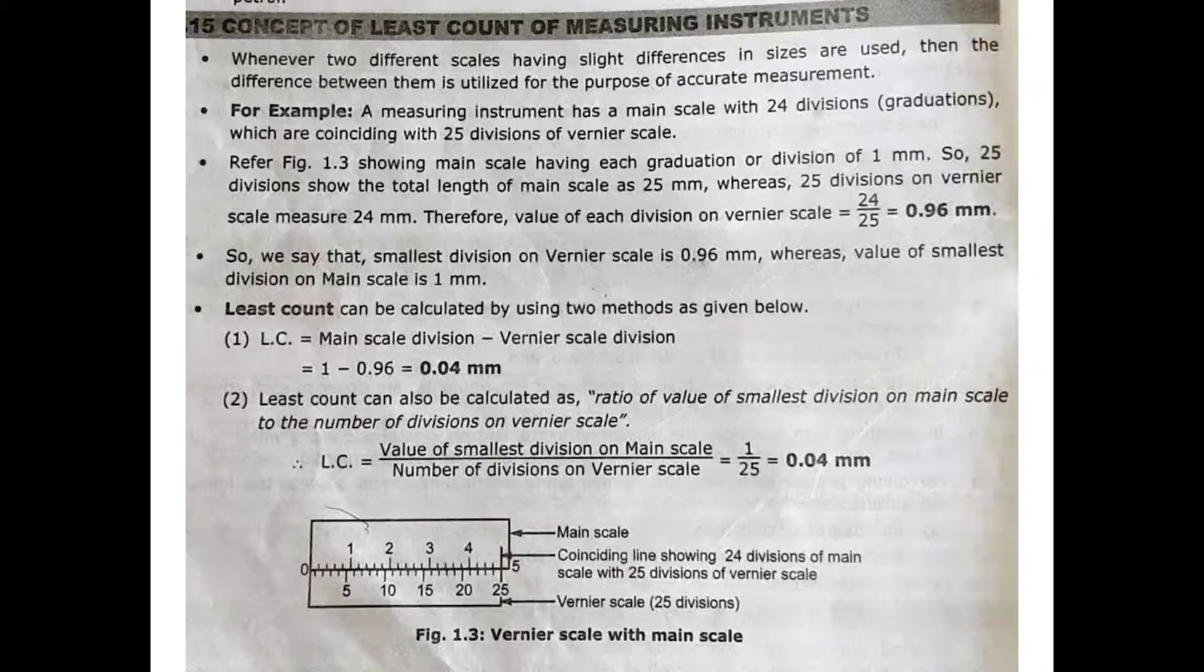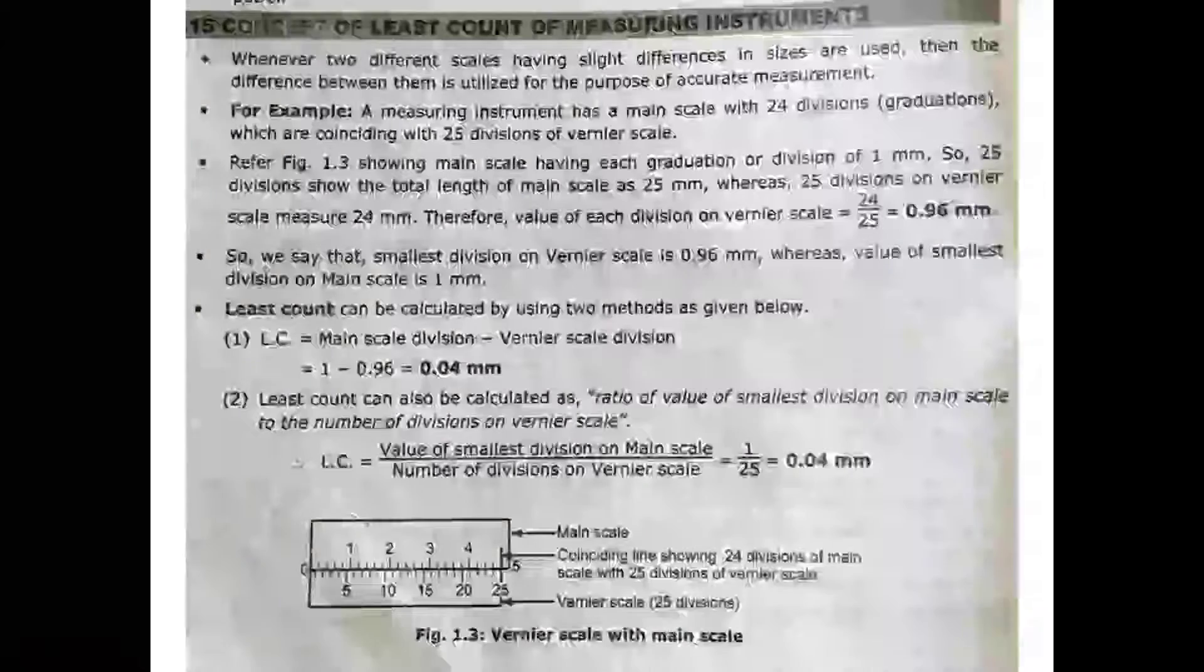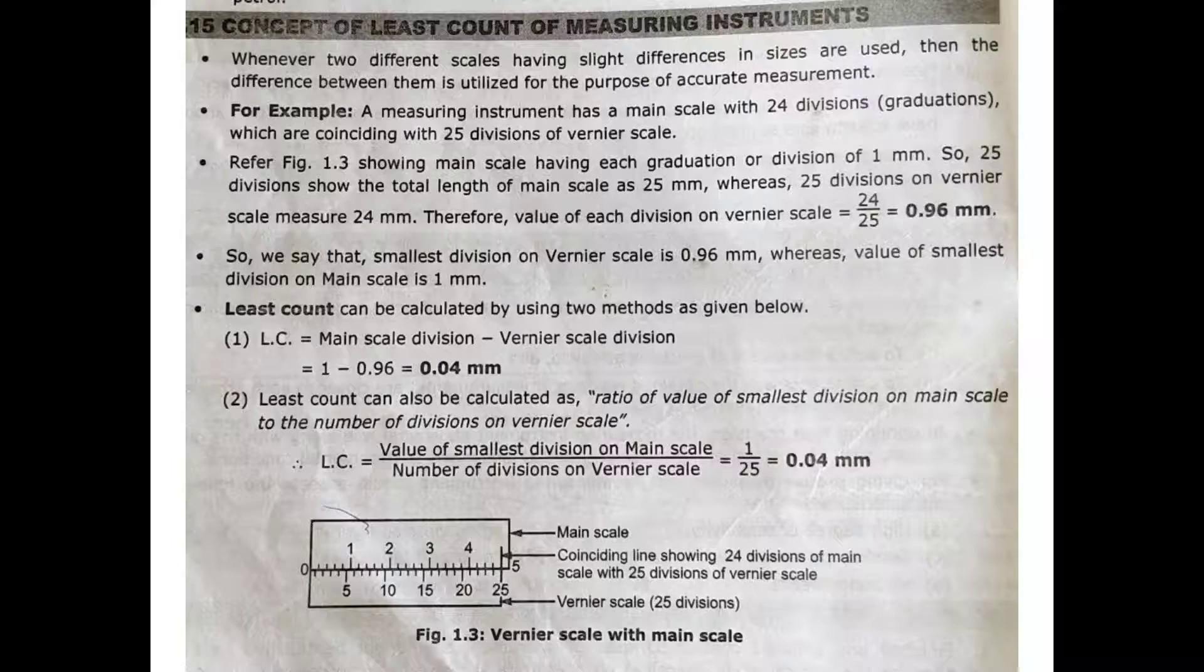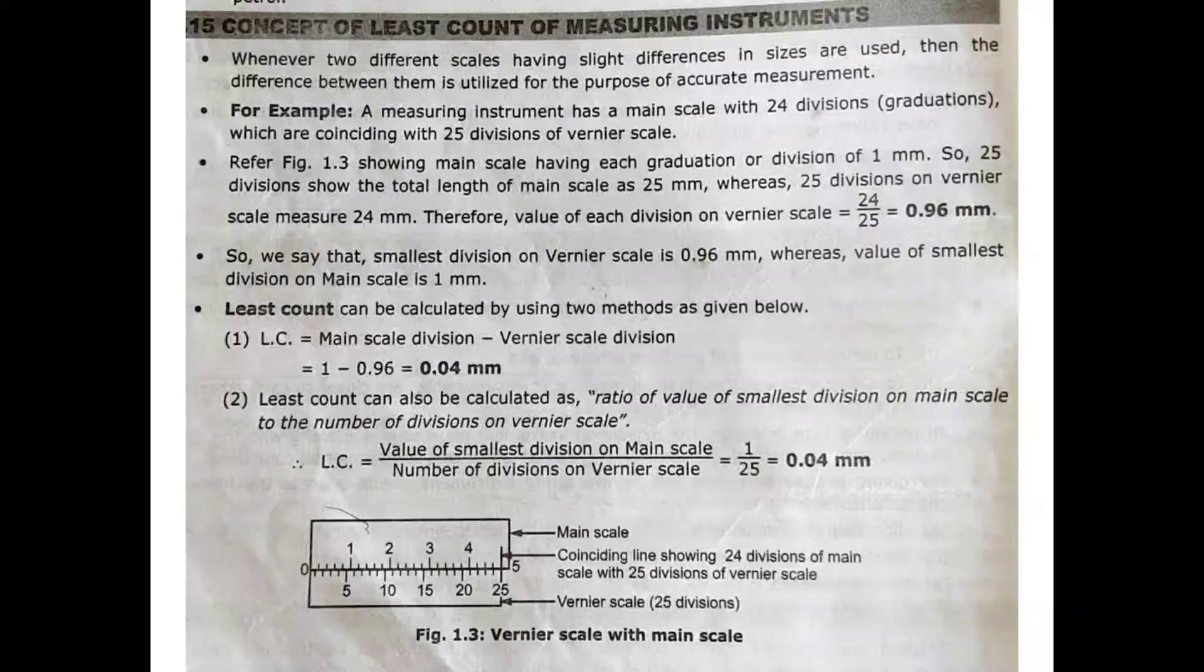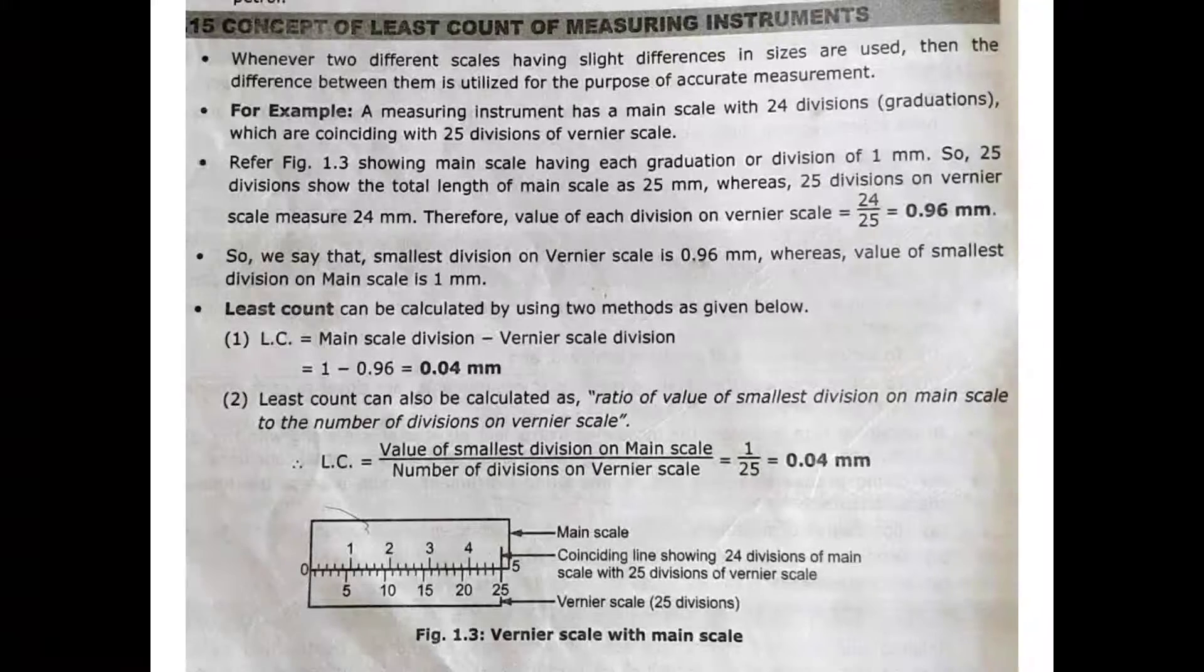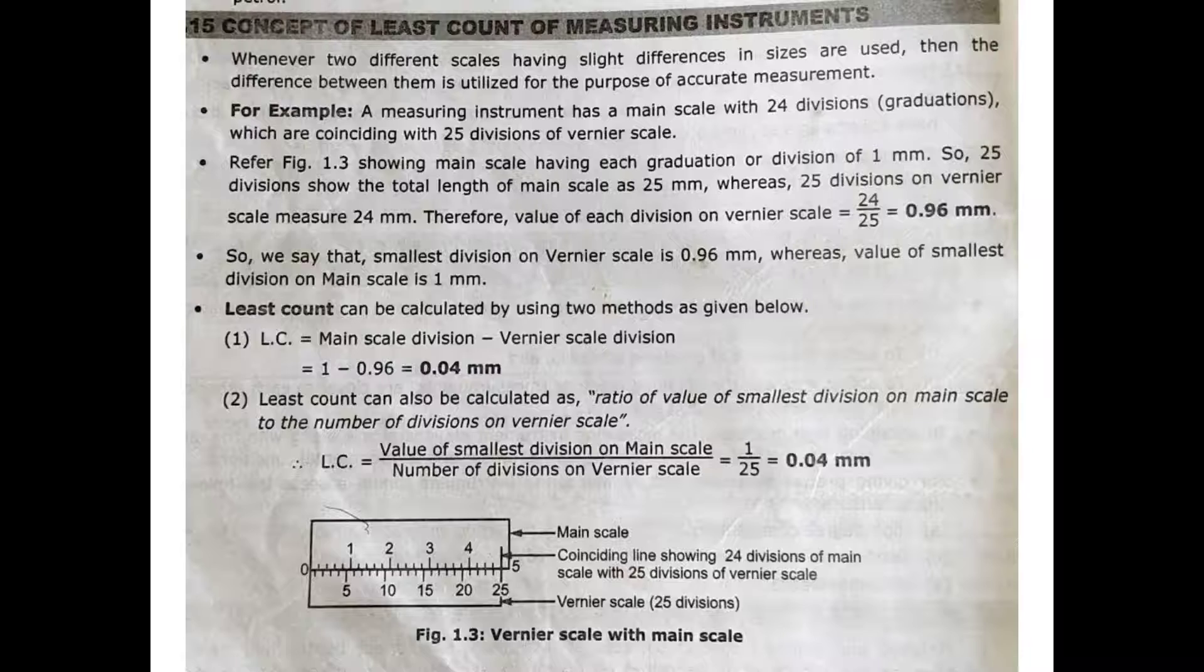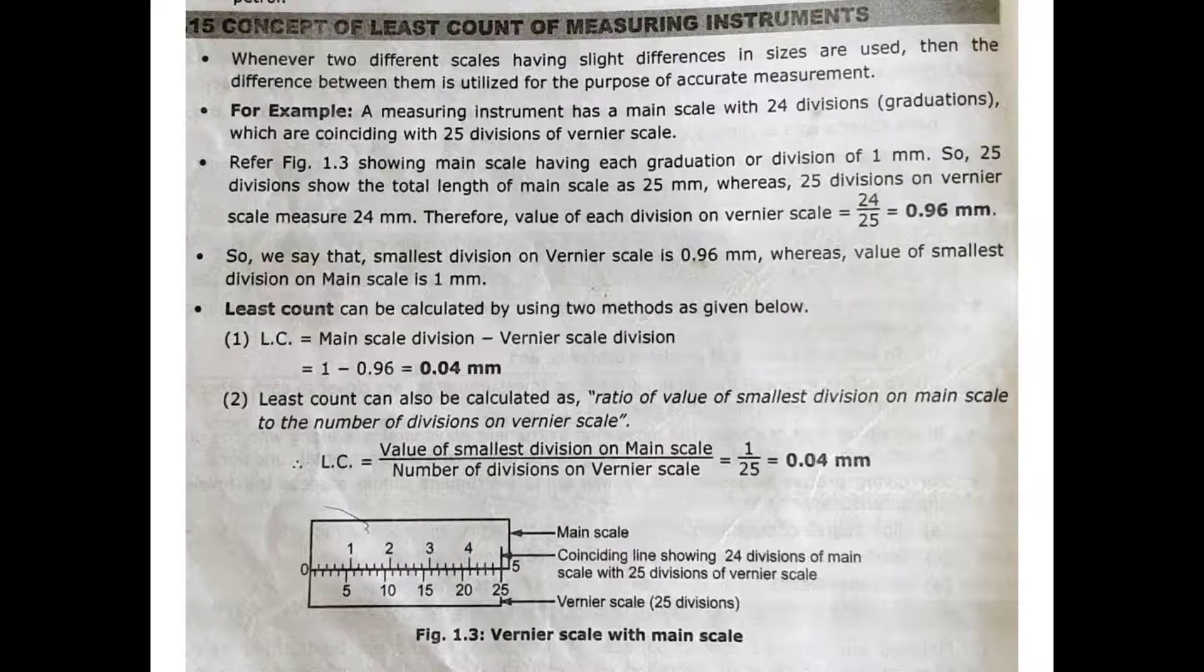Therefore, least count equals value of smallest division on main scale divided by number of divisions on vernier scale, which equals 1/25, which equals 0.04 mm. Below, a diagram is given showing the vernier scale with main scale, from which you can understand the concept of least count.